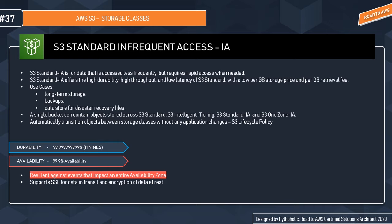The key thing to associate with S3 Standard IA is data that is less frequently accessed but requires rapid retrieval when needed. So if you want faster retrieval but the data is accessed infrequently, Standard IA is the right choice.